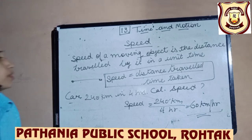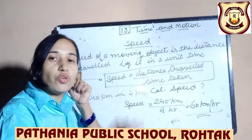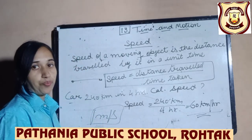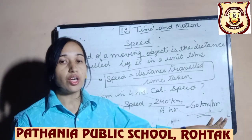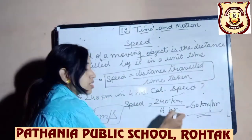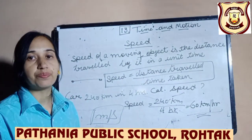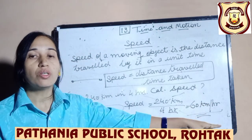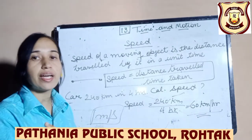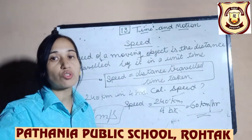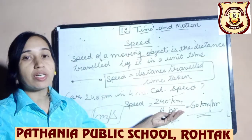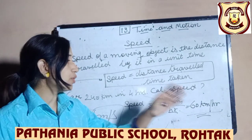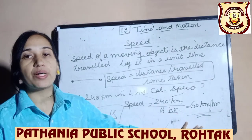The standard unit of speed is meters per second. So we must convert first — kilometers should be changed to meters, and hours should be changed to seconds. One hour contains 3600 seconds. Convert kilometers to meters and hours to seconds, then calculate the answer in meters per second.